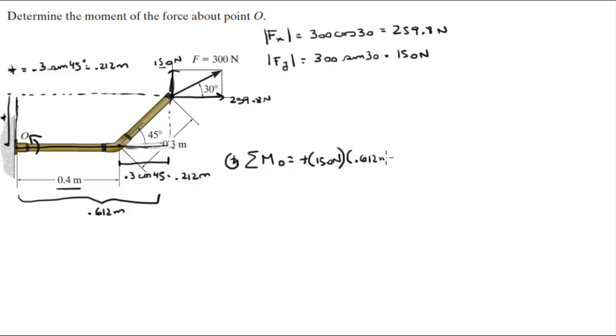Now the second one, which is this lever arm, is being pulled by this force of 259, and it's being pulled clockwise, so it's negative. So it's 259.8 newtons times 0.212 meters.